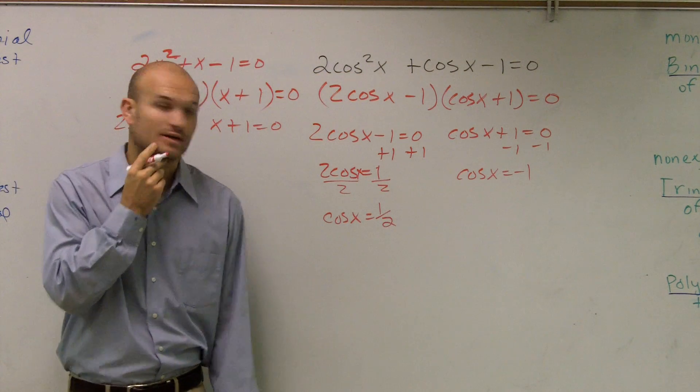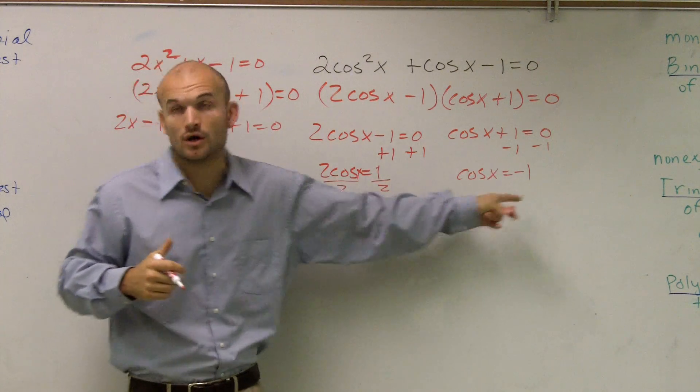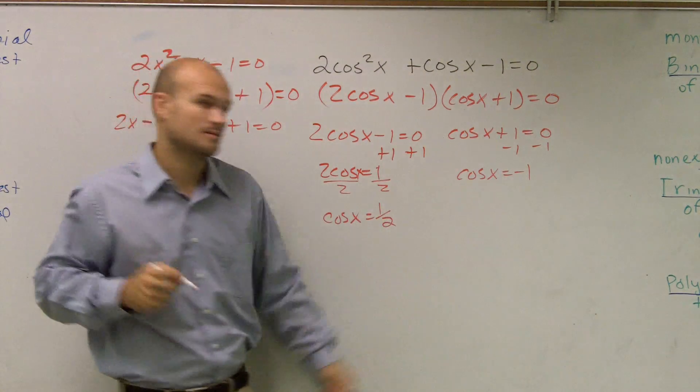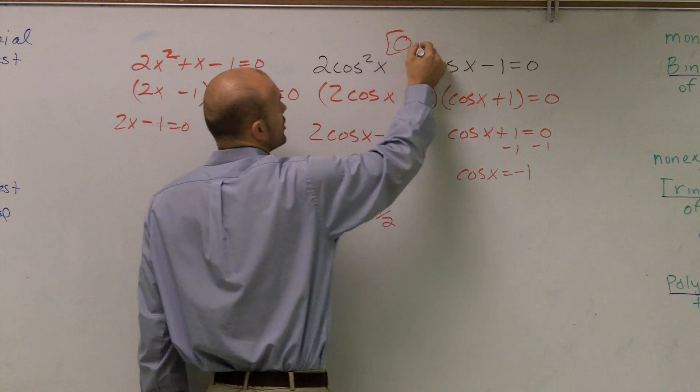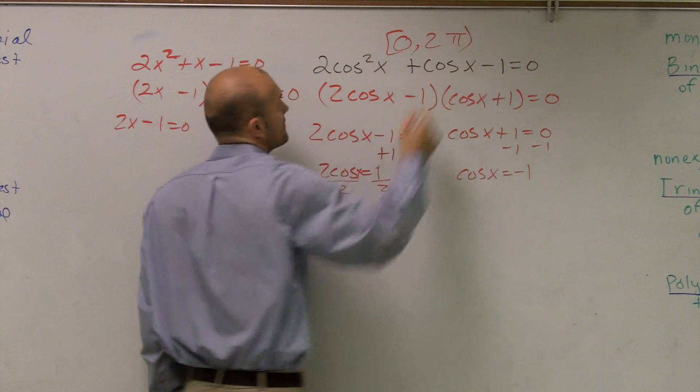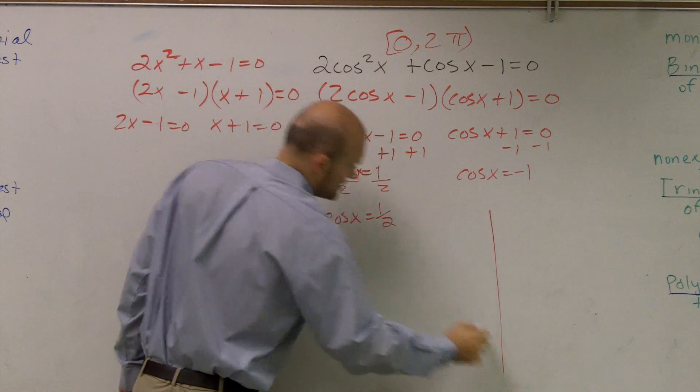So now, the next thing I need to look at is, OK, so when are my values of x equal to these two points? And remember, the constraint of this problem was between 0 and 2 pi. Right? That was our constraint. So what I'm going to do is I'm going to look to my unit circle.